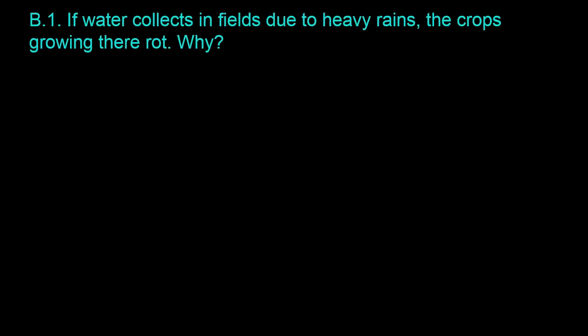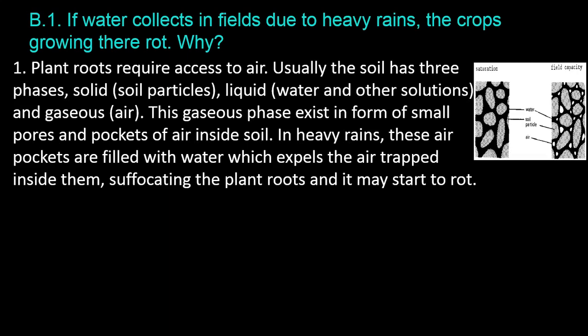Question B.1: If water collects in fields due to heavy rains, the crops growing there rot — why? Plant roots require access to air. Usually the soil has three phases: solid — soil particles; liquid — water and other solutions; and gaseous — air. This gaseous phase exists in the form of small pores and pockets of air inside the soil.